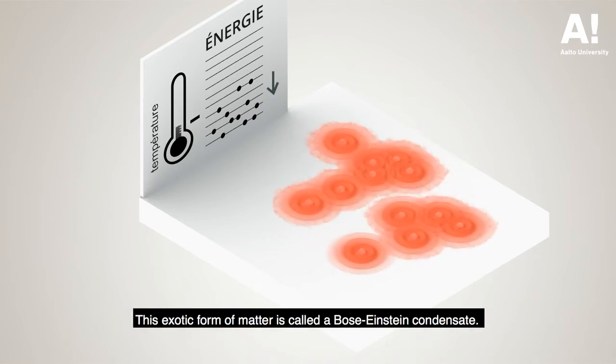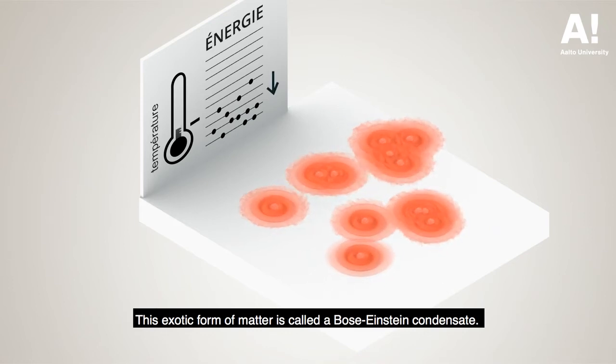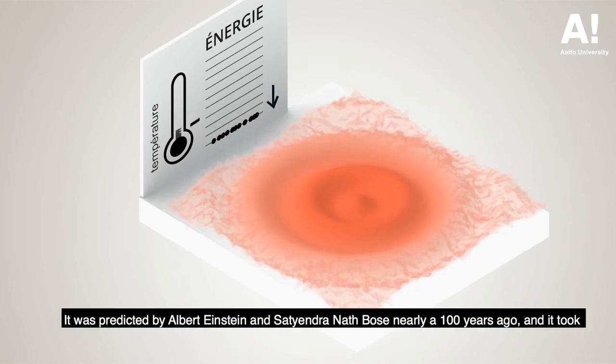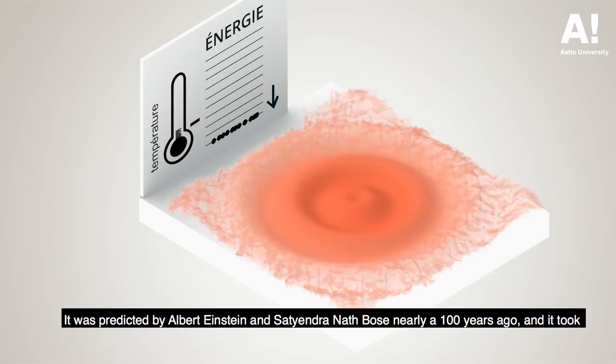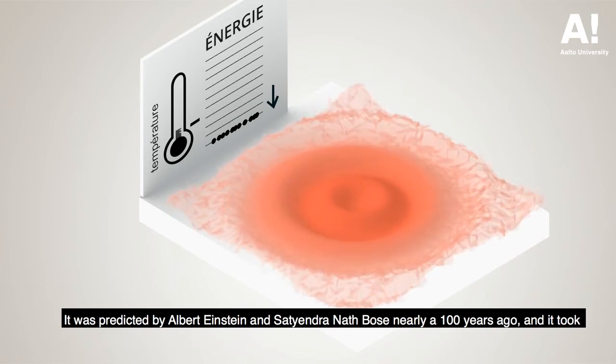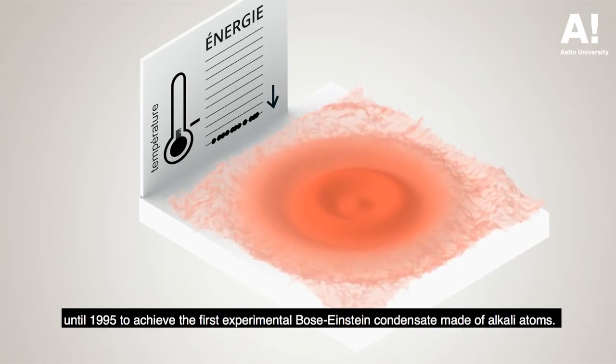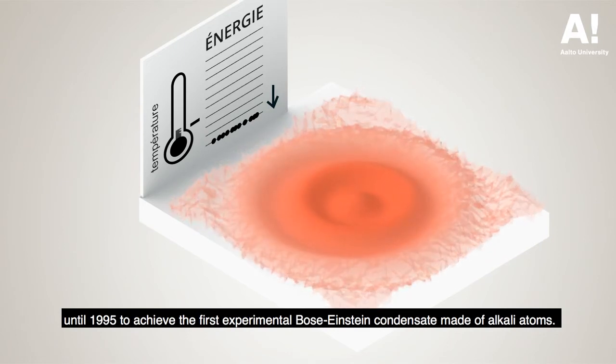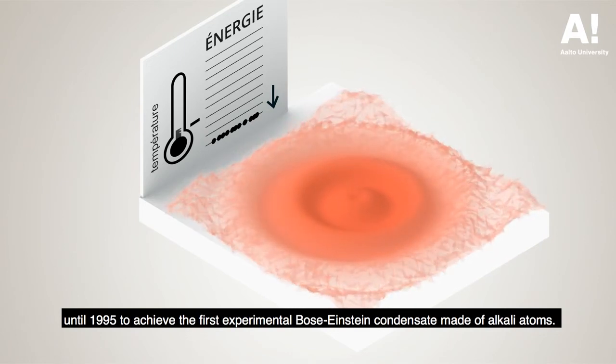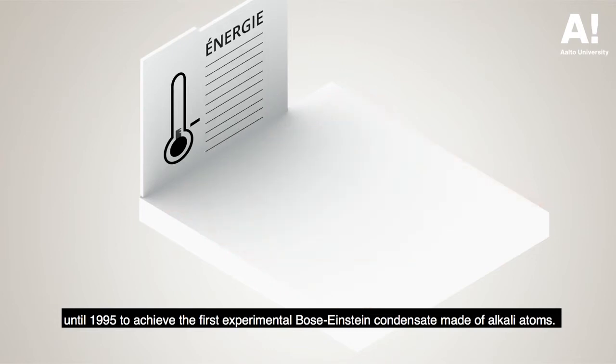This exotic form of matter is called a Bose-Einstein condensate. It was predicted by Albert Einstein and Satyendra Nath Bose nearly 100 years ago, and it took until 1995 to achieve the first experimental Bose-Einstein condensate made of alkali atoms.